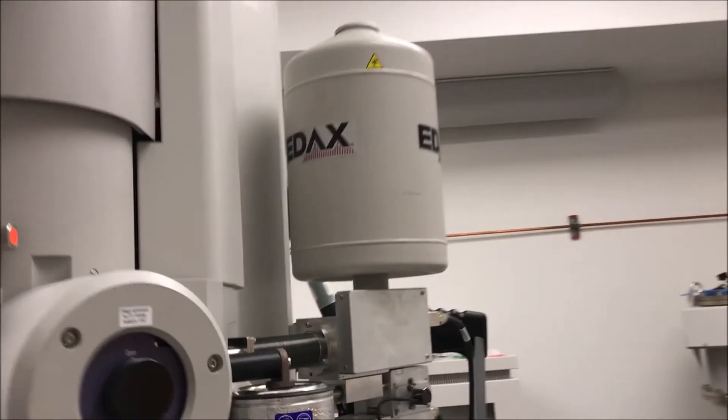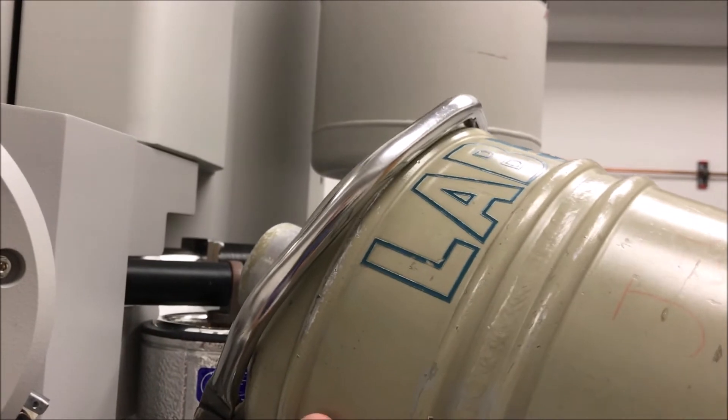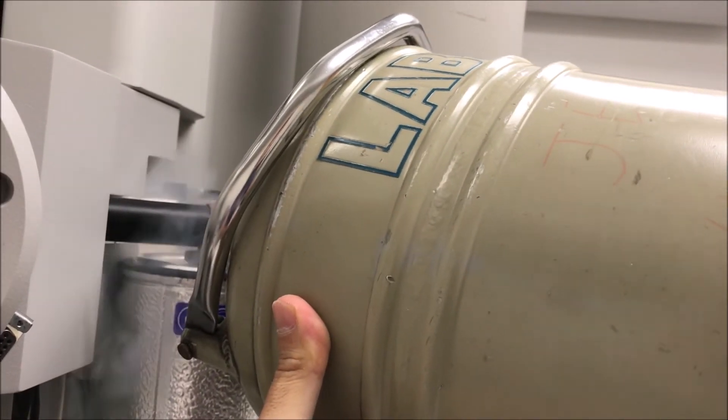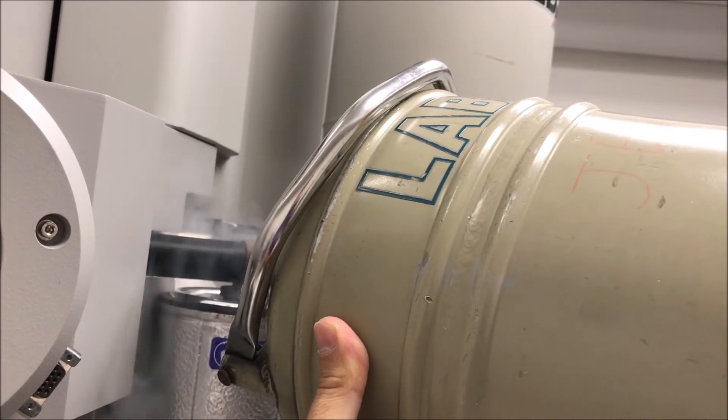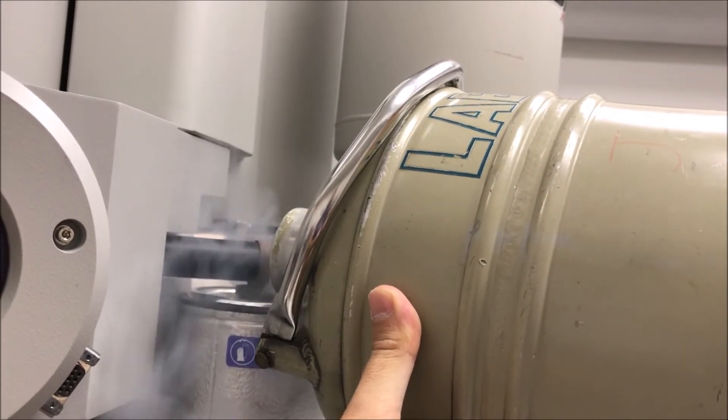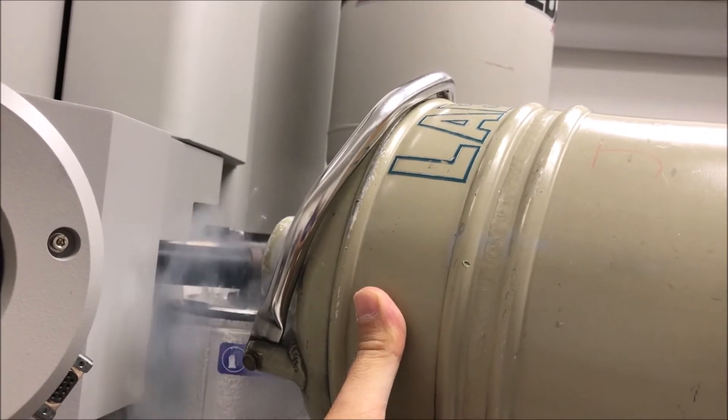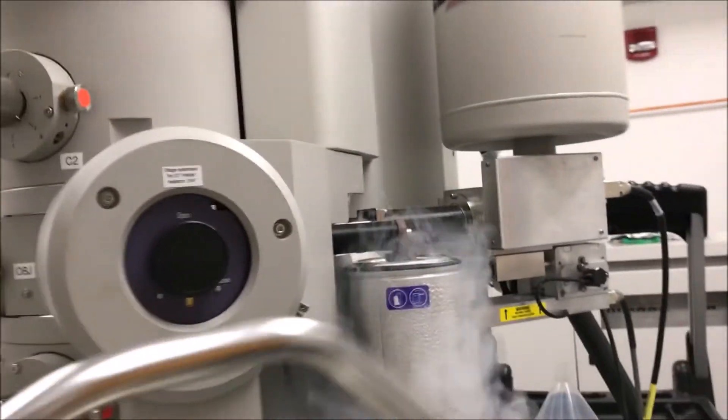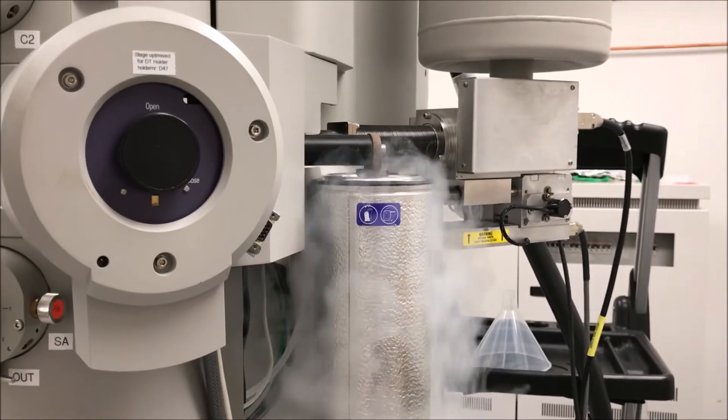Then you need some liquid nitrogen. I have some already here in a separate dewar. You're going to fill up the canister. Make sure the canister is already on the support base with the copper braids inside. You don't want to fill the canister first and then put it up there. Fill this all the way to the top. If you spill a little bit, that's not a problem because you have the viewing screen covered. Now we're going to wait about five minutes and then fill it up again.